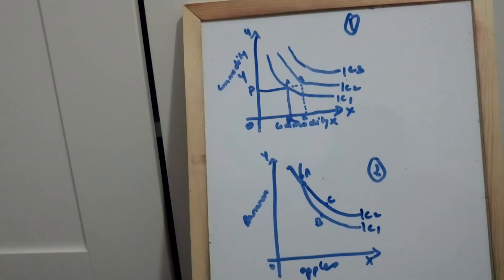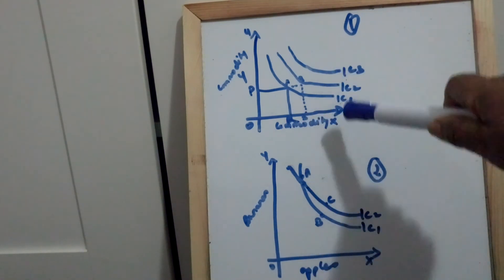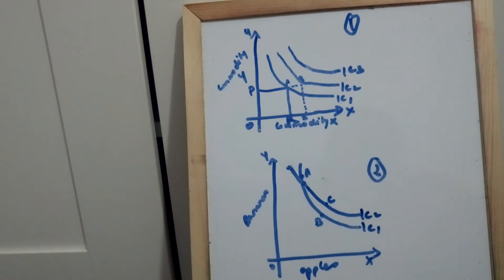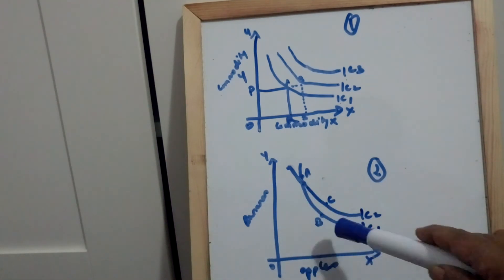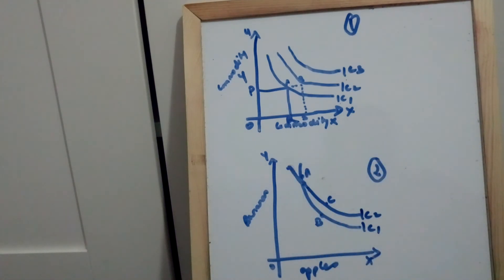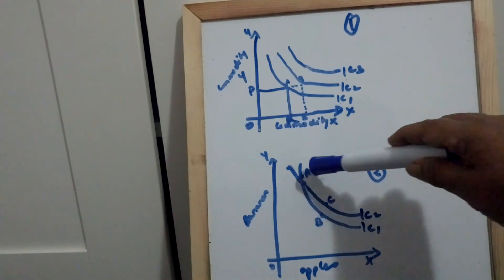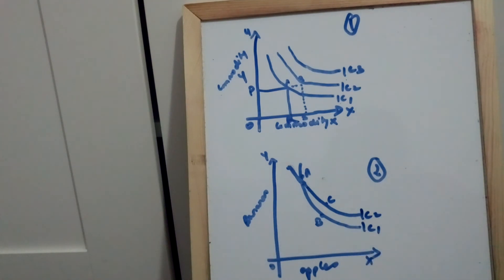The next property is that indifference curves cannot intersect each other. Two indifference curves cannot represent the same level of satisfaction, so they cannot intersect. Only one indifference curve will pass through a given point on an indifference map. In this diagram, satisfaction from point A and from point B on IC1 will be the same. Similarly, points A and C on IC2 also give the same level of satisfaction.